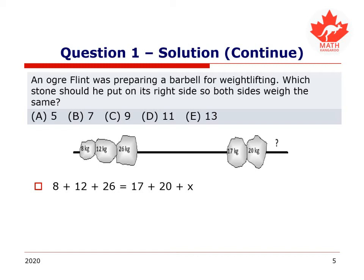This operation is called isolating for x. So let's do some quick mental arithmetic. On the one hand, we have 46 equals, and then on the other hand we have 17 plus 20, 37 plus x. 46 equals 37 plus x. In order to isolate x, we need to subtract 37 from both sides of the equation.